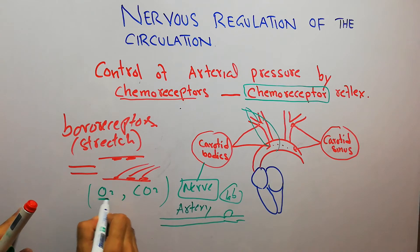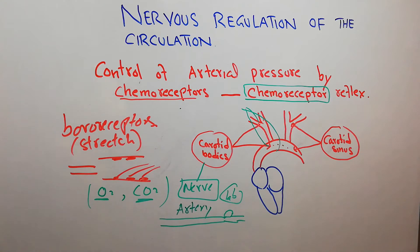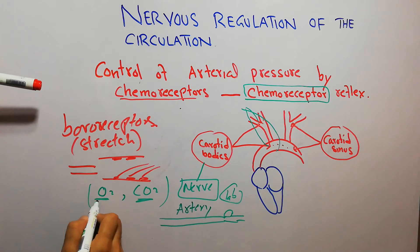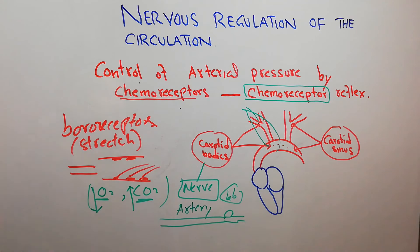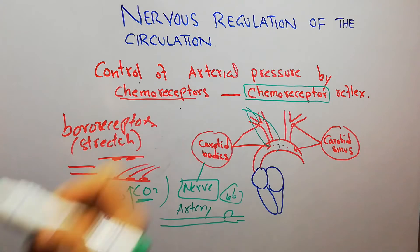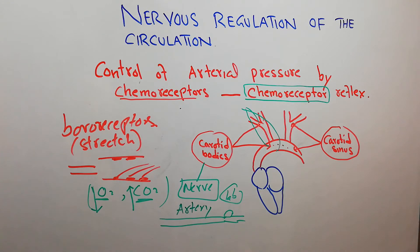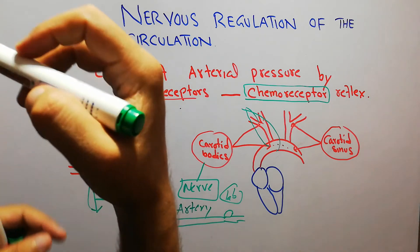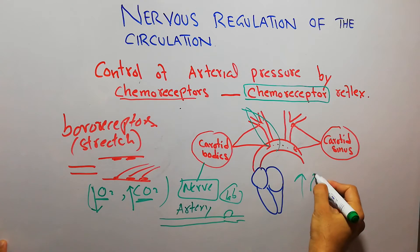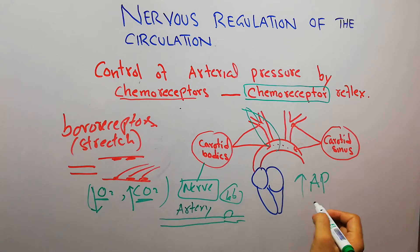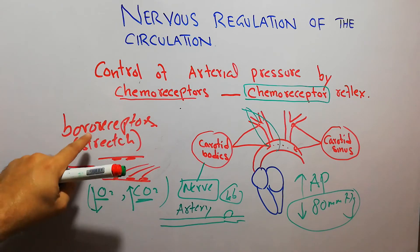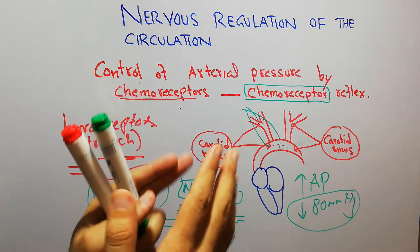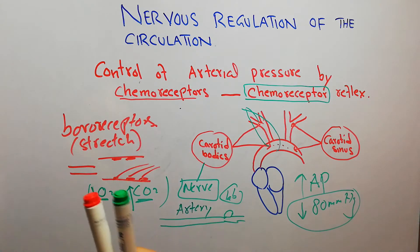Chemoreceptors detect the level of oxygen and carbon dioxide. If the level of oxygen has decreased and the level of carbon dioxide has increased, these chemoreceptors start sending signals to the brain and they mostly help to increase the arterial pressure — especially when the arterial pressure has decreased below 80 mmHg. The main difference is that baroreceptors are sensitive to stretch of blood vessels, while chemoreceptors are sensitive to chemicals like oxygen and carbon dioxide.